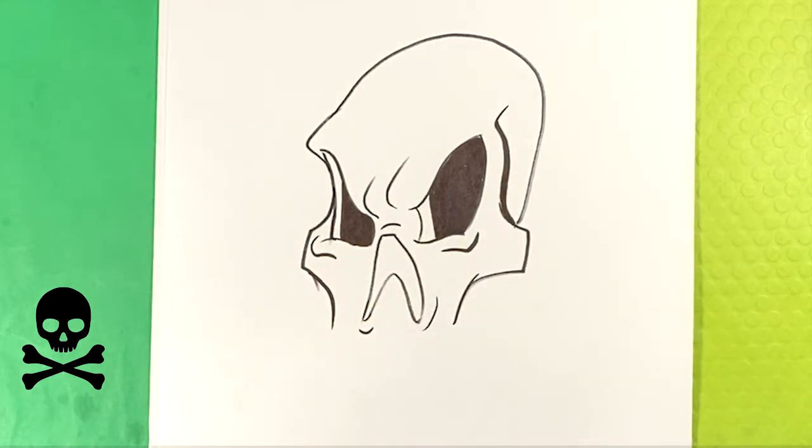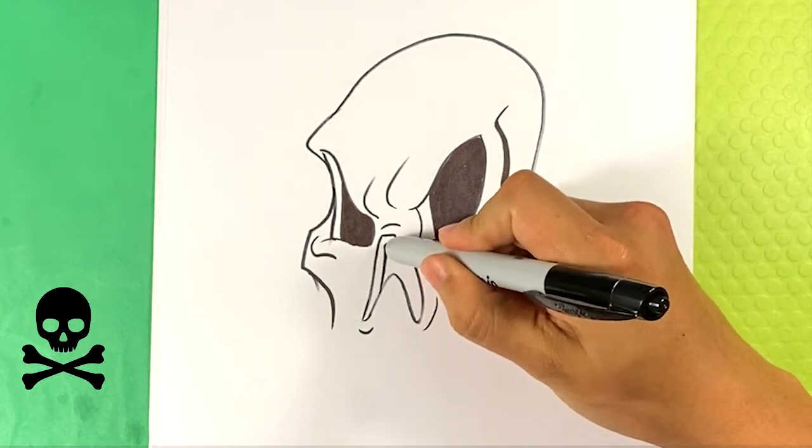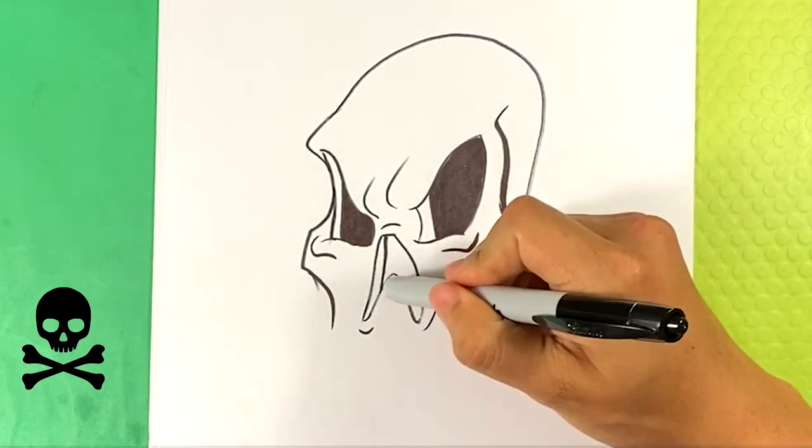Pulling a line in right there for the, this is called the zygomatic arch. It's kind of bones right here on the right side of the face. Gonna go on this side as well, throw a line here, and then fill all this to the right in dark.